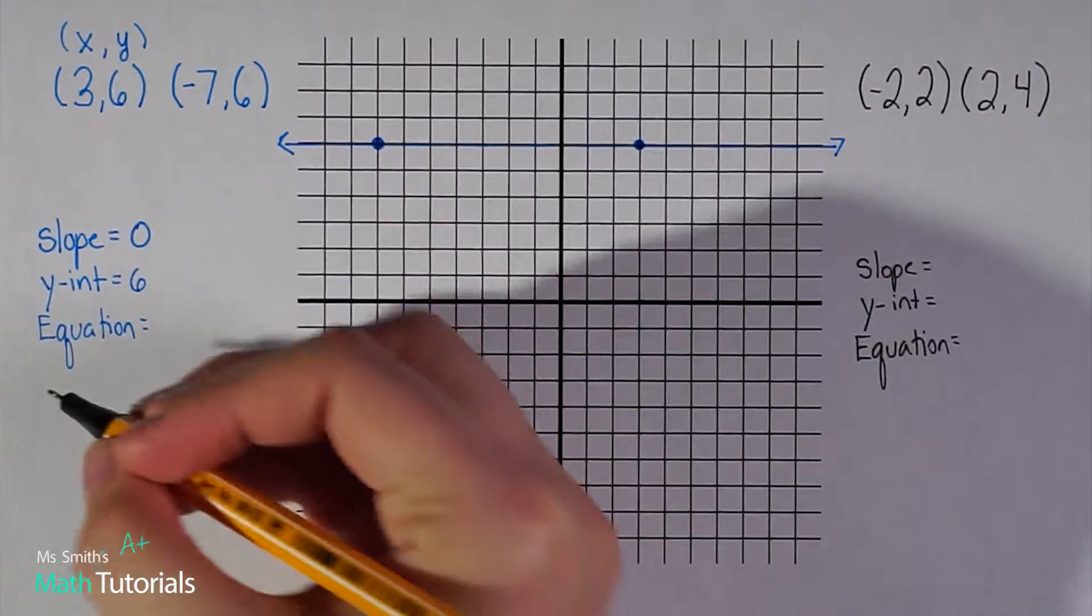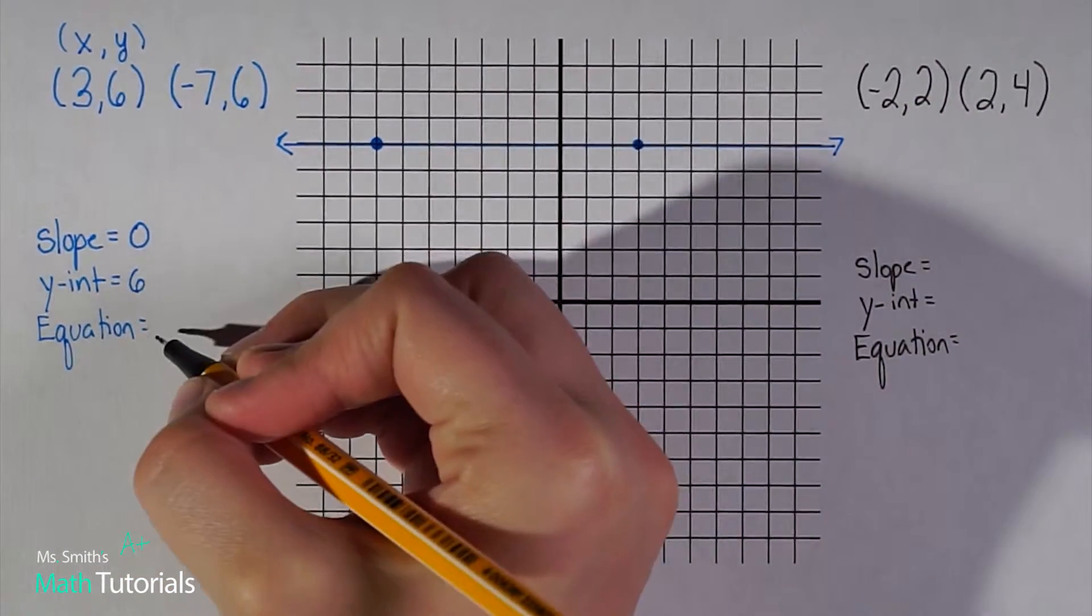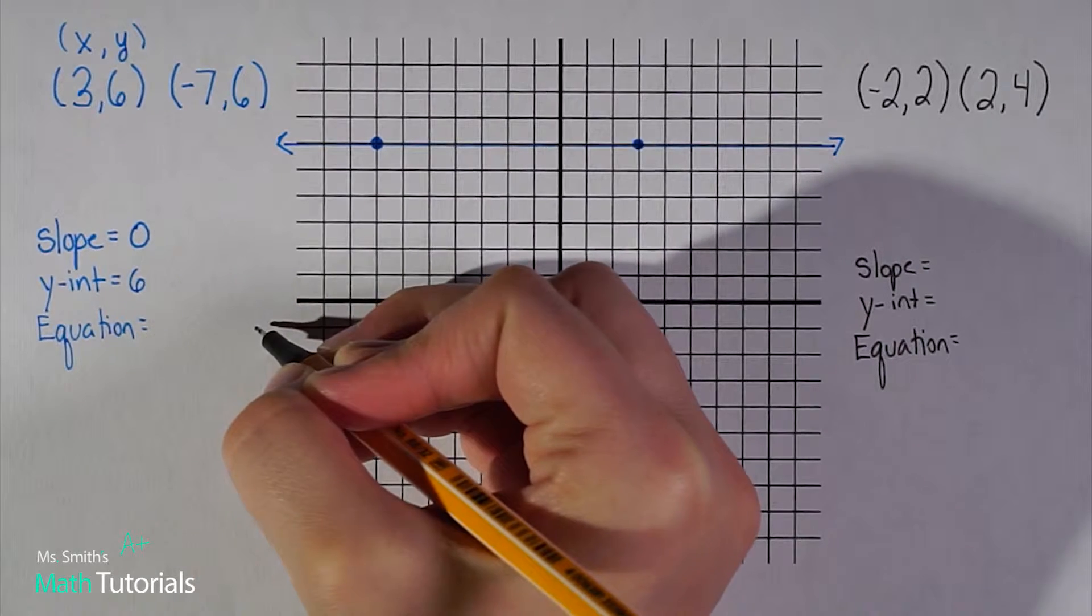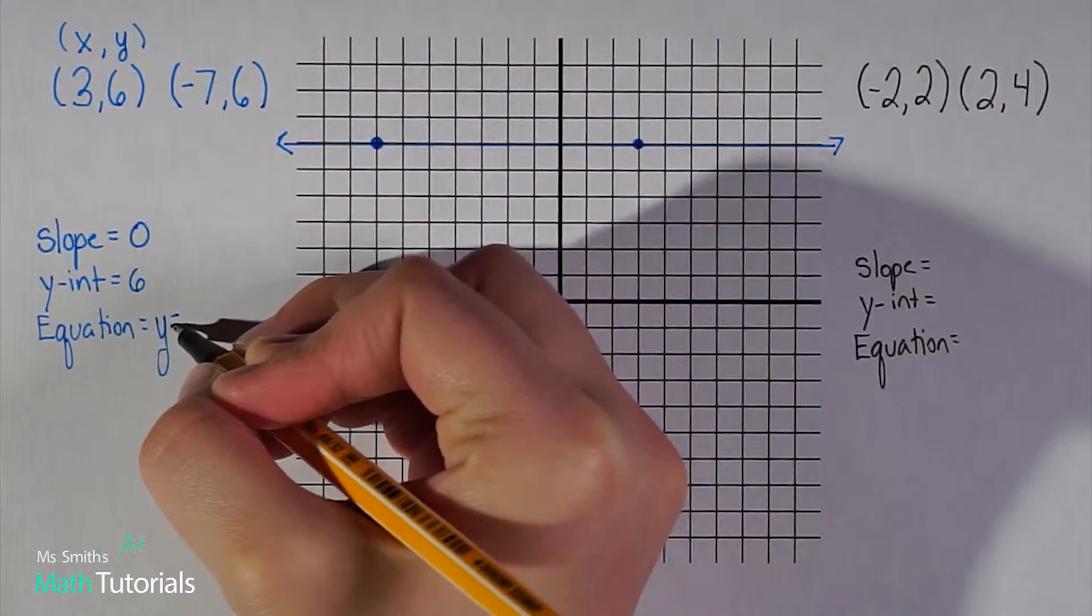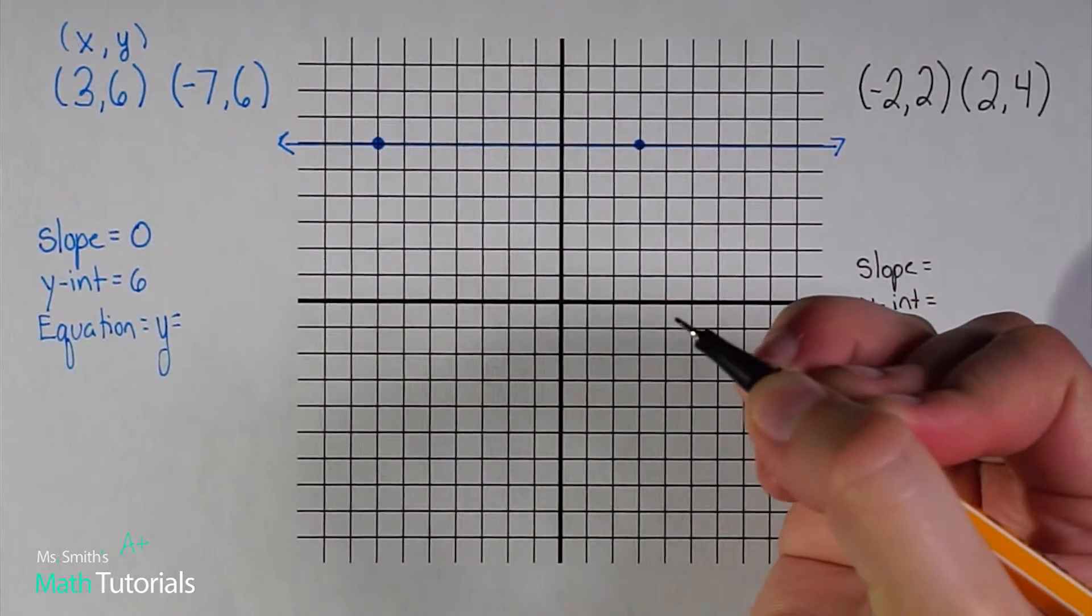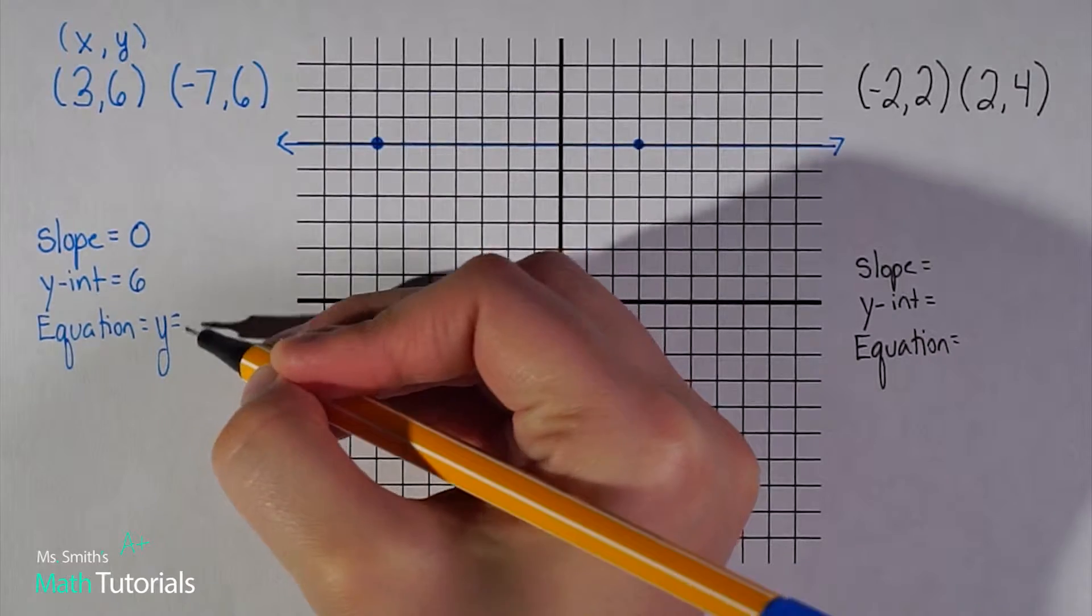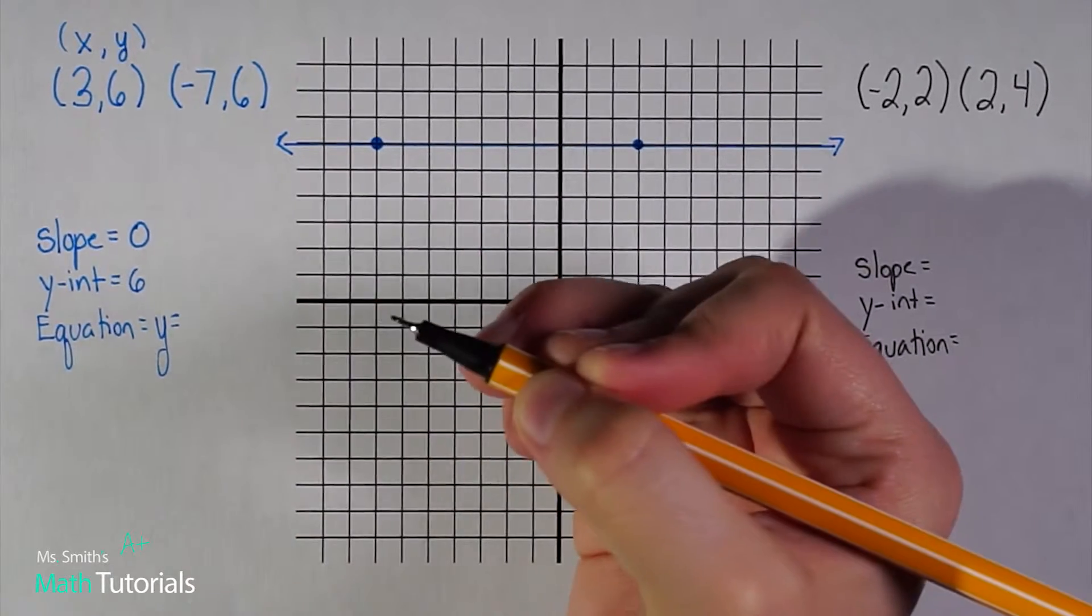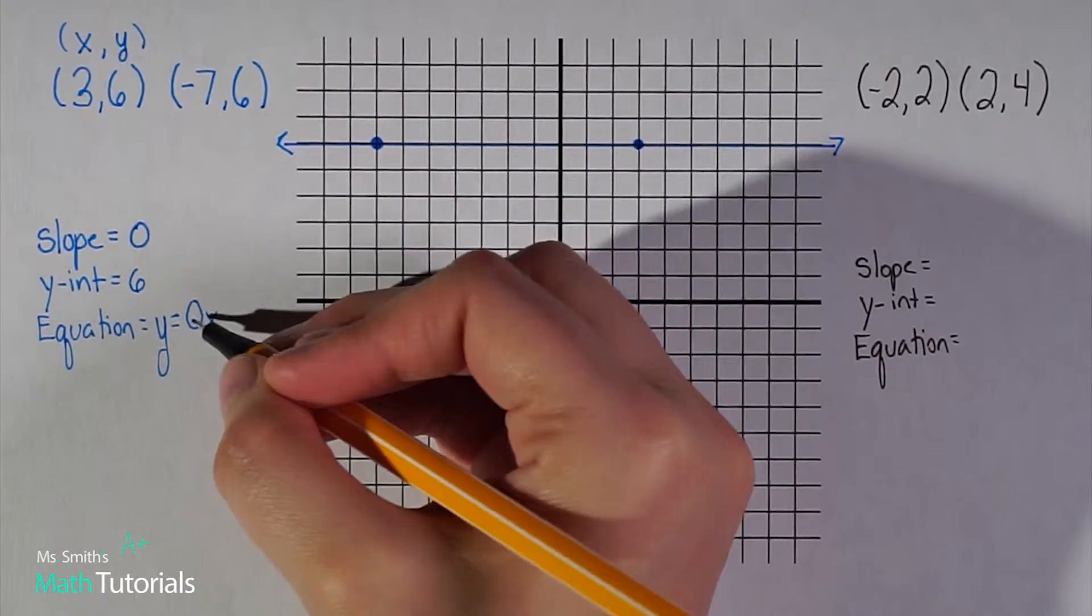I want my equation to be in slope intercept form, y equals mx plus b. I've got y equals m, m is slope zero. Do I need to write 0x? Let's see: my slope is 0x.